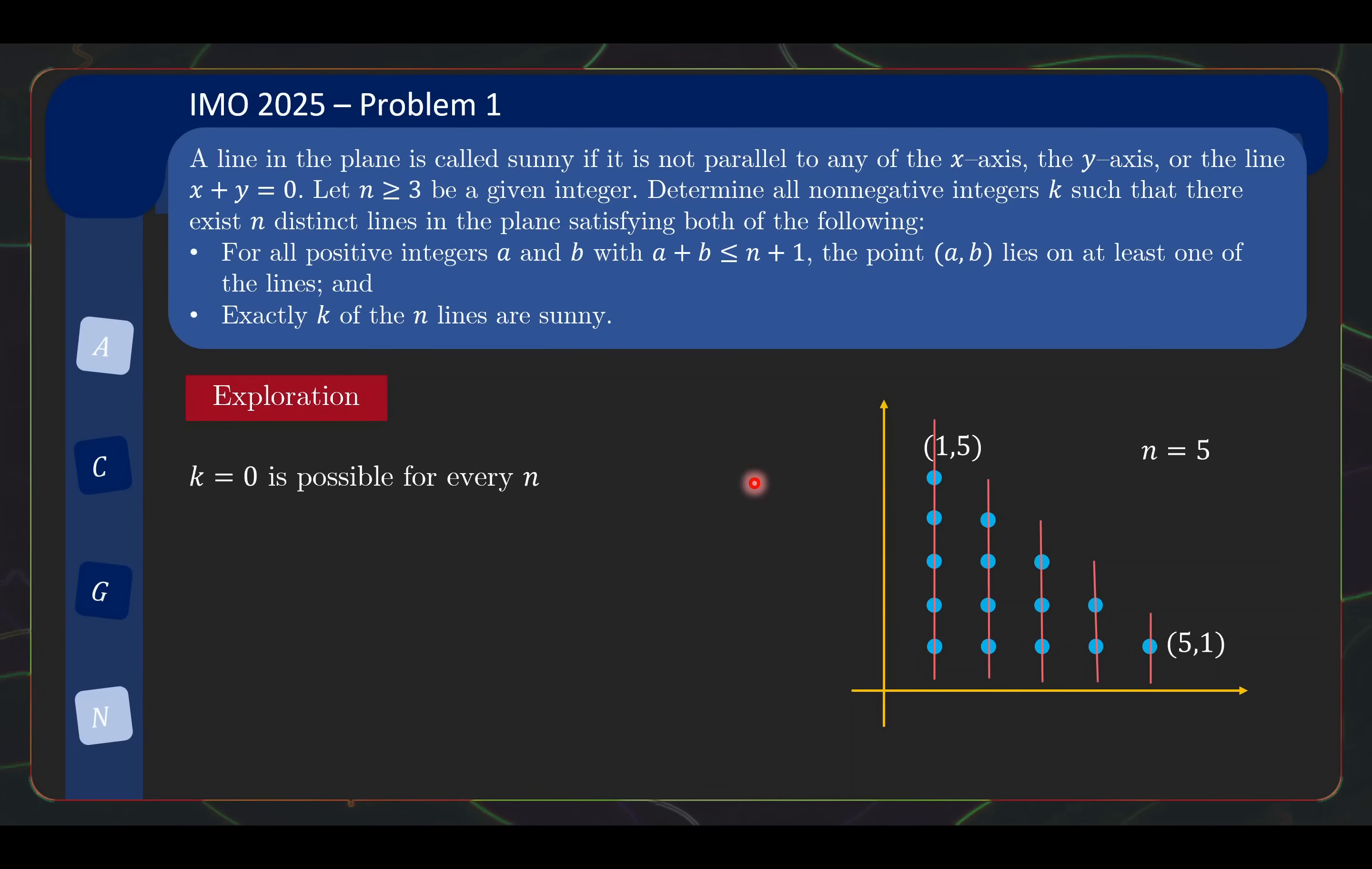Is 0 a possible number of sunny lines? Indeed it is. Because if I use all vertical lines, then all the lines here are not sunny. So k equals to 0 is possible. Now in fact, this construction tells you that k equals to 0 is a possible solution for every n because this construction can be easily generalized to every n.